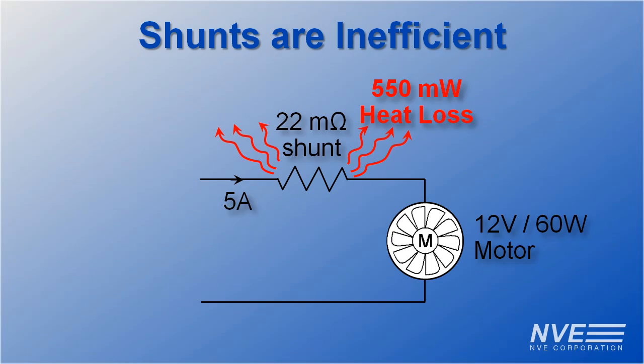Shunts are also inefficient. In this example, nearly 1% of the power is lost in the shunt resistor.